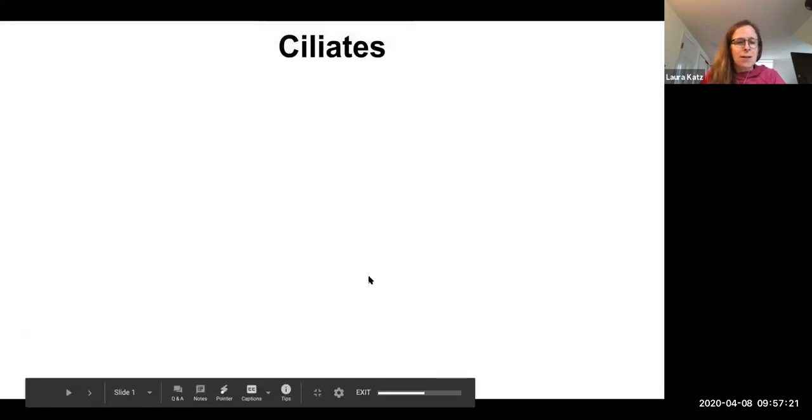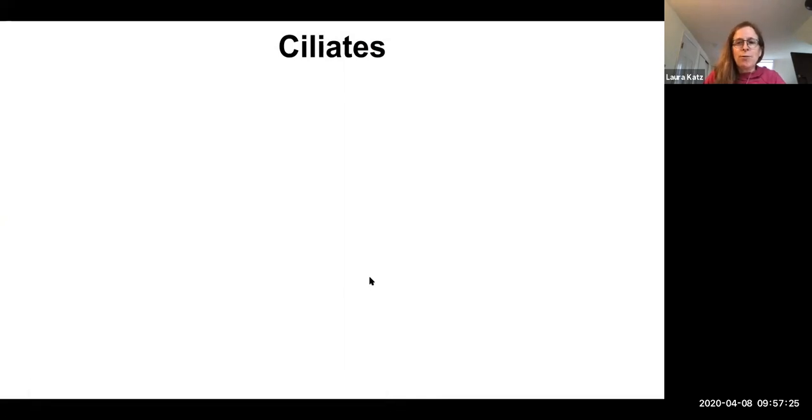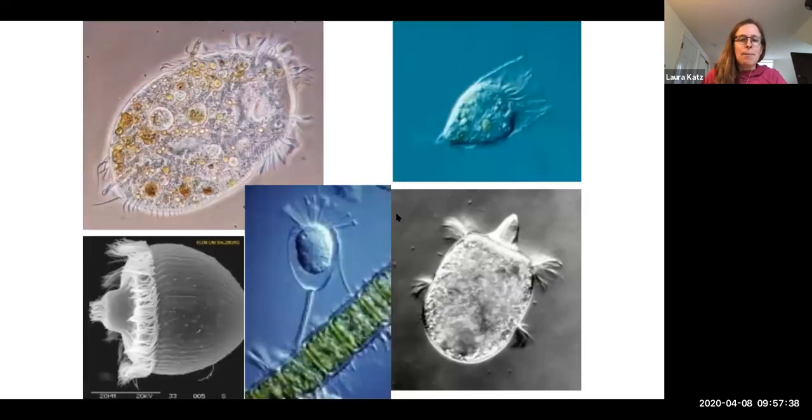I want to just give you an overview of ciliates, and I want to start by arguing to you that ciliates do everything but drive trucks. Ciliates are incredibly diverse, and one thing that I want to draw out is that they're just beautiful, so aesthetically pleasing. Here's just some examples of ciliates with their many different shapes, and this one is a suctorian that has these little tentacles. I'll say a little bit more about them.